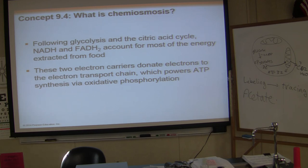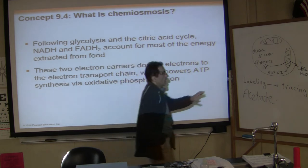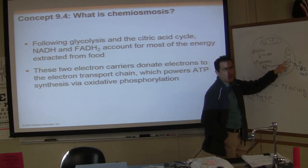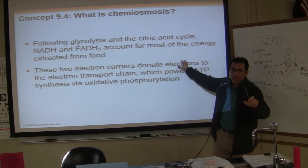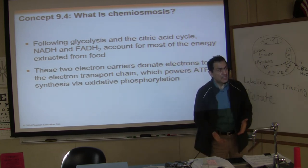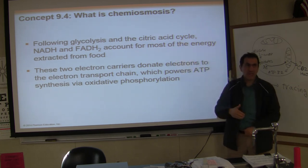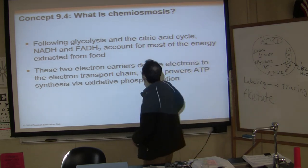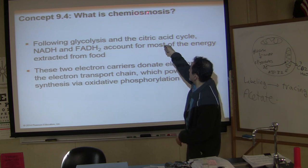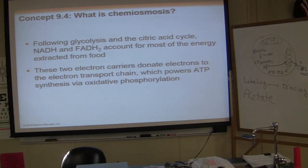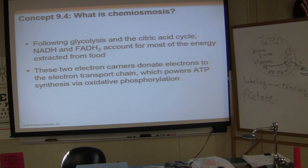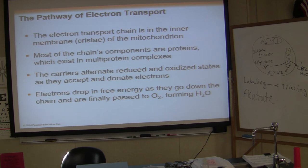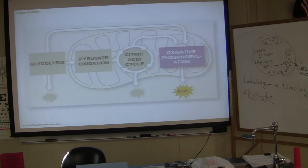What is chemiosmosis? Following glycolysis and citric acid cycles, NADH and FADH account for most of the energy extracted from food. These two electron carriers donate electrons to the electron transport chain, which powers ATP synthesis via oxidative phosphorylation. The pathway of electrons is shown right here — we will discuss the electron transport chain next.